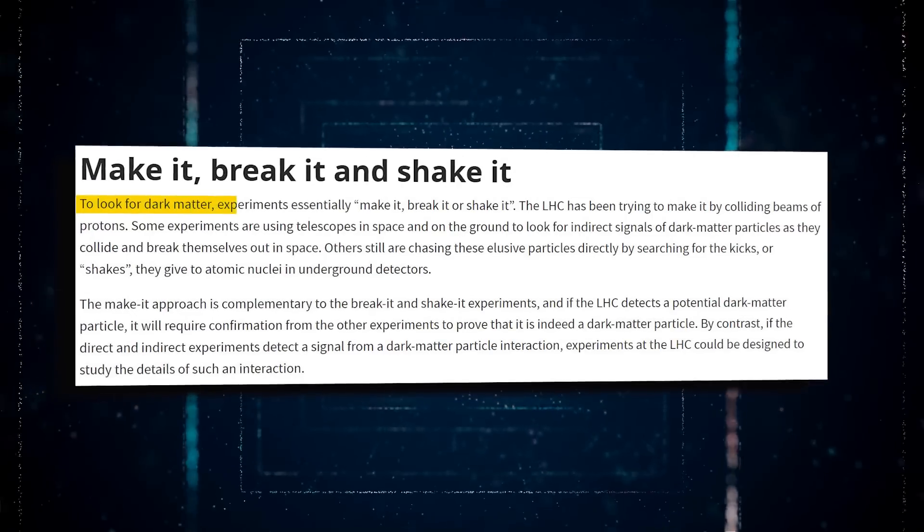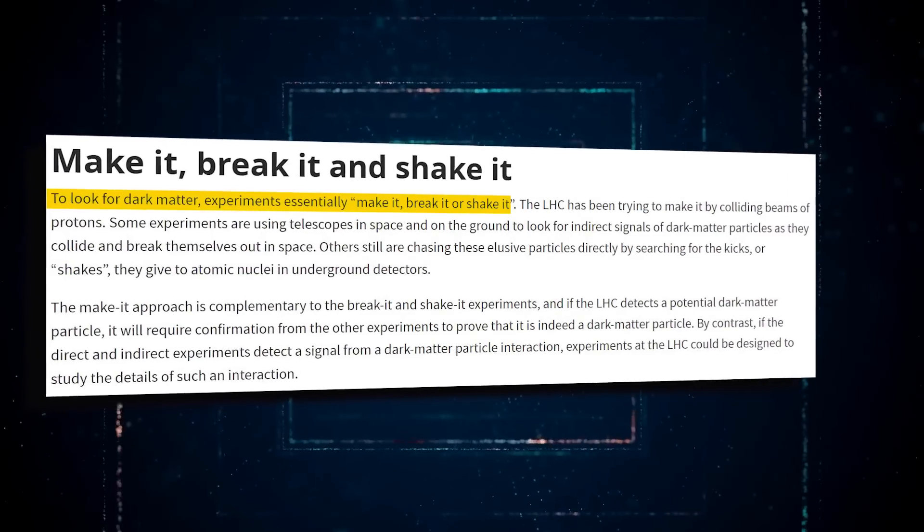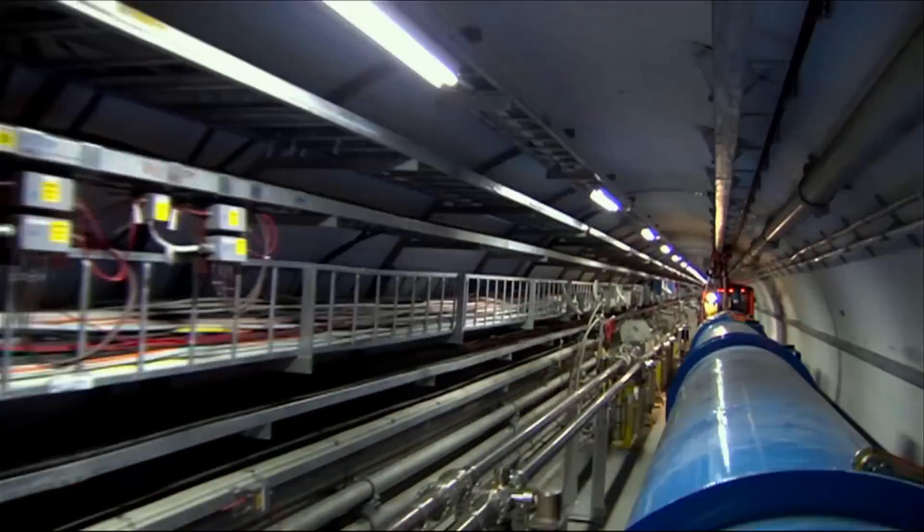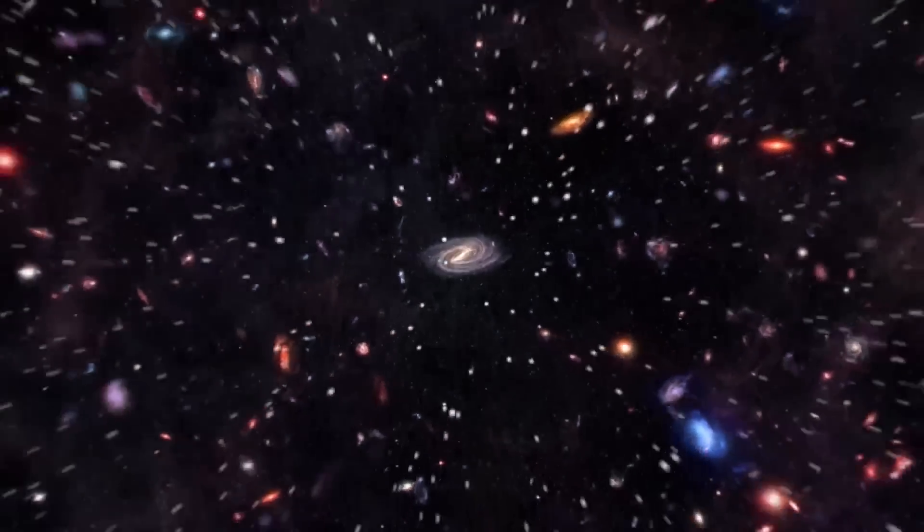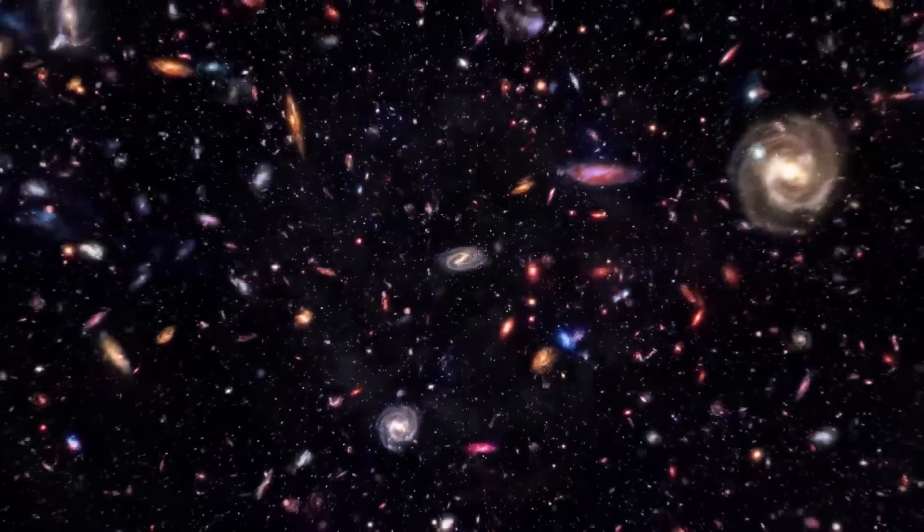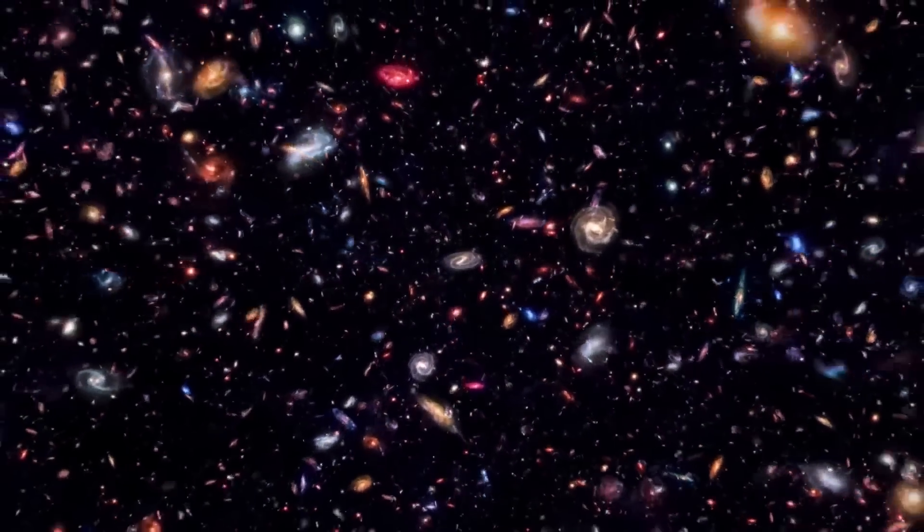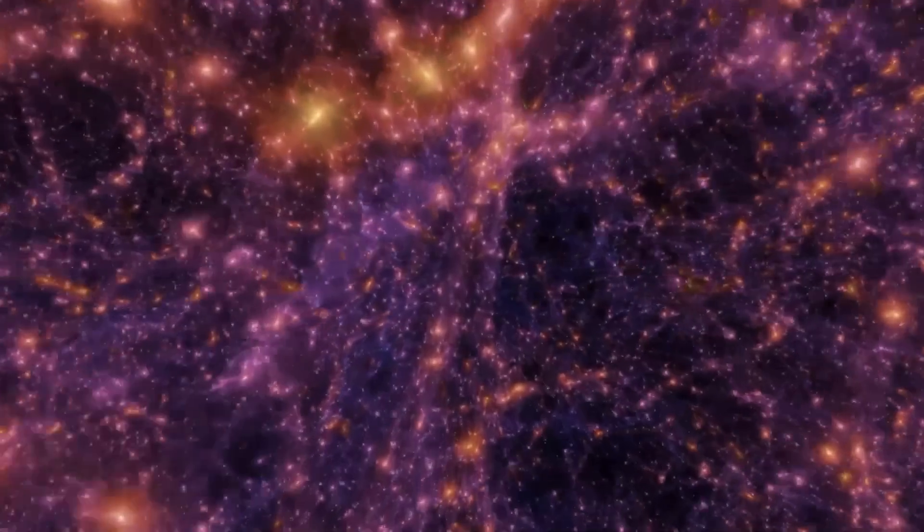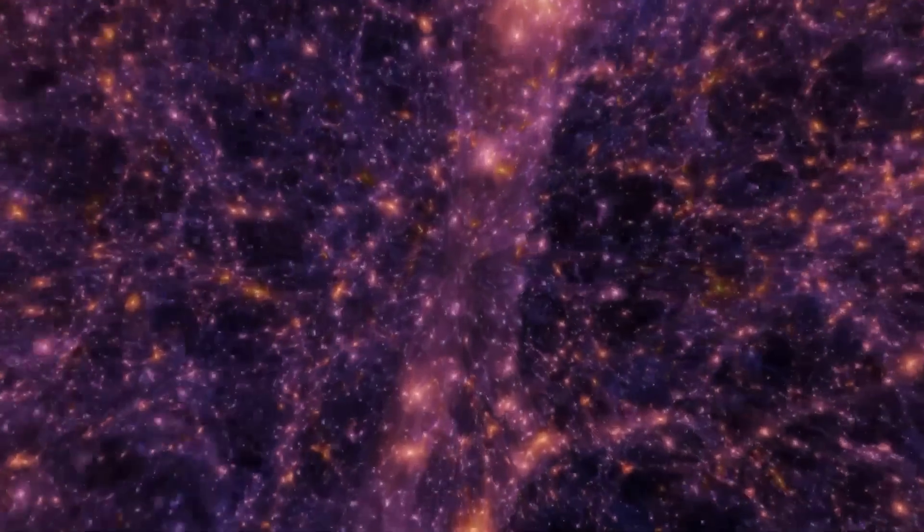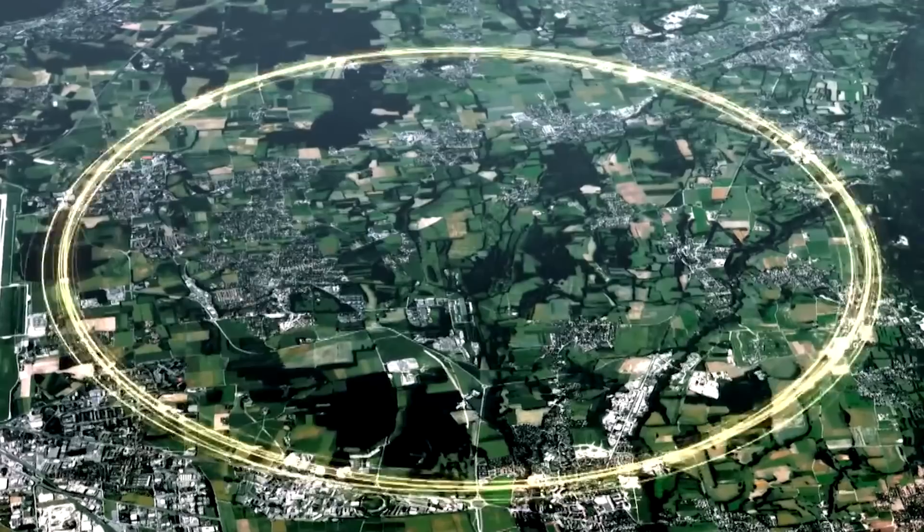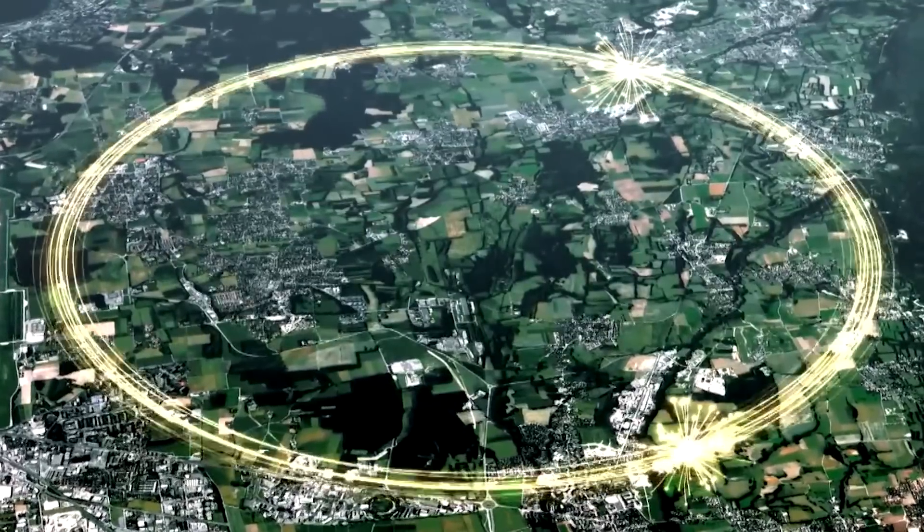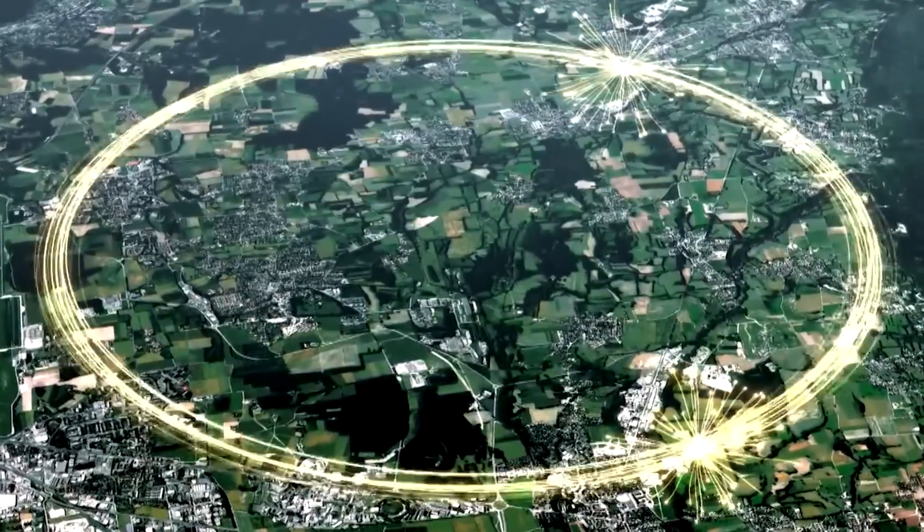The make it strategy complements the break it and shake it experiments, and if the LHC identifies a possible dark matter particle, confirmation from the other experiments will be required to verify that it is, in fact, a dark matter particle. In contrast, if the direct and indirect experiments receive a signal from a dark matter particle interaction, LHC experiments may be tailored to investigate the intricacies of that interaction.